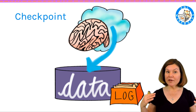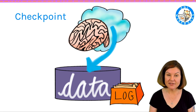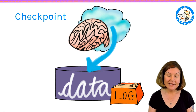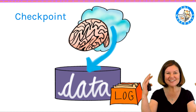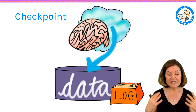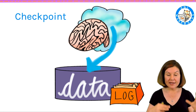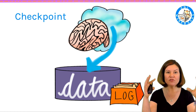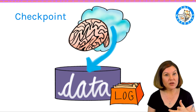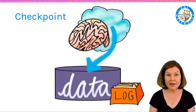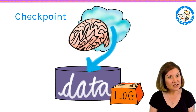Periodically, SQL Server will flush data from memory into the data file of the database in a process called checkpoint. It flushes this data down — I think of it as kind of like rain, flushing data from memory into the data file. When it does this, it doesn't think about what modifications are happening right now; it just flushes dirty pages down into the data file. If I really need to know what transactions are committed or not, I'm not going to look in the data file — that's the transaction log file's job.